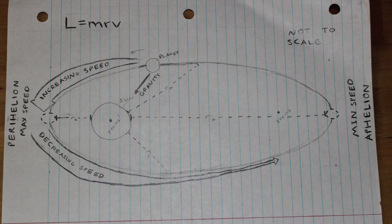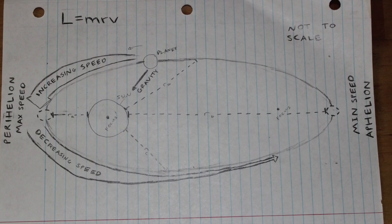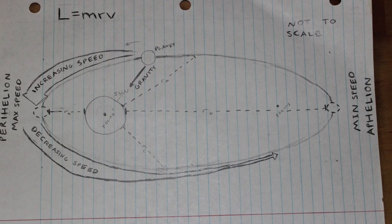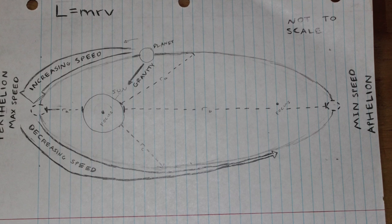We know that m stays the same, and that r changes at different points in the path. Take a look at the different r's on the diagram to see how r changes.